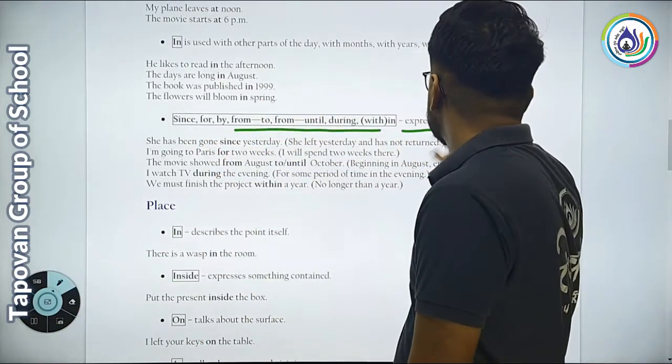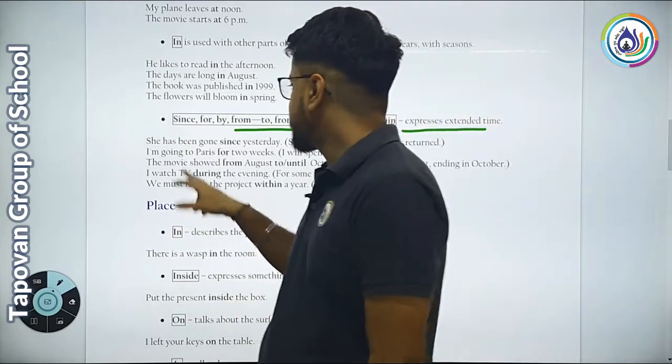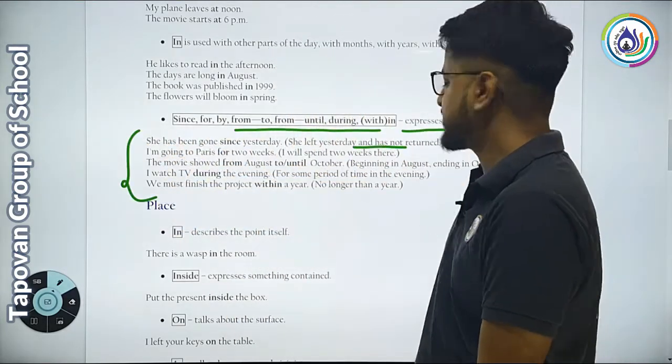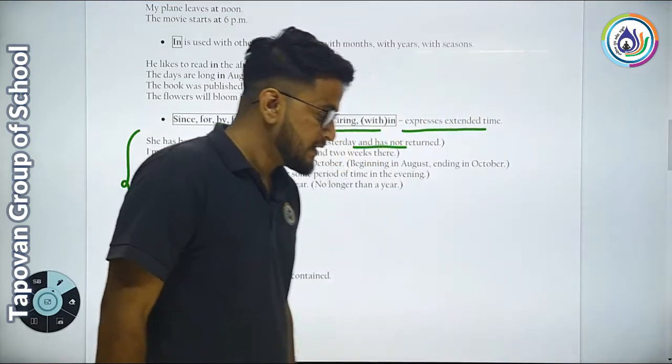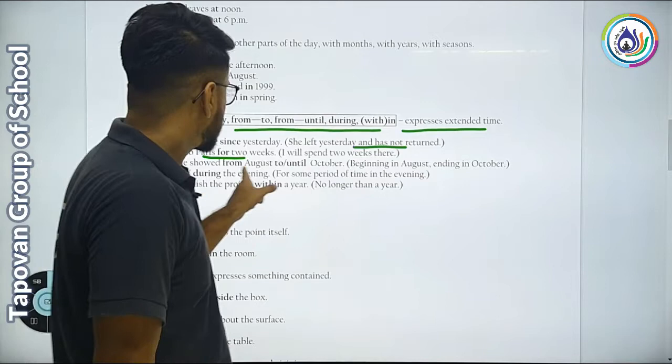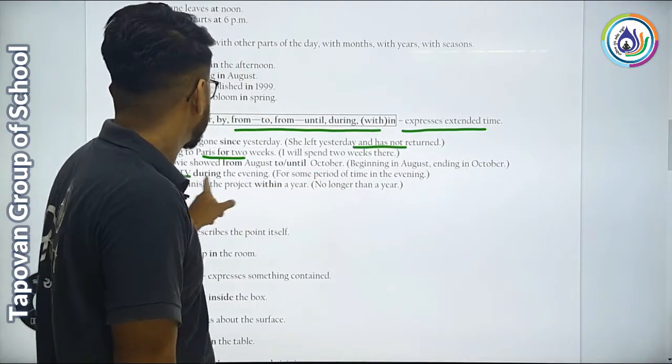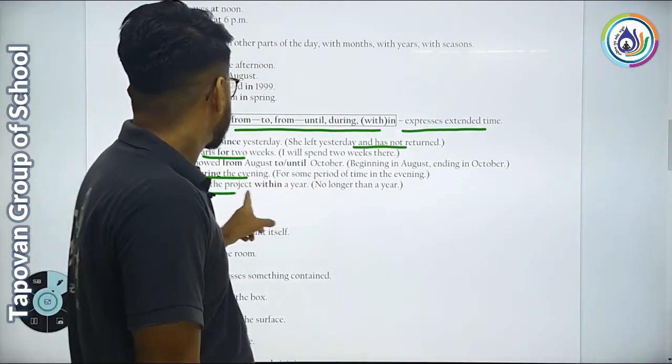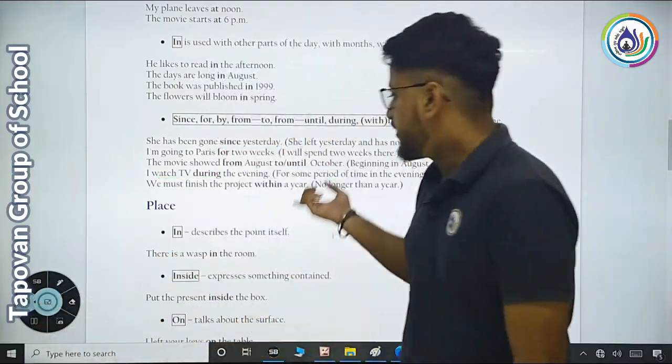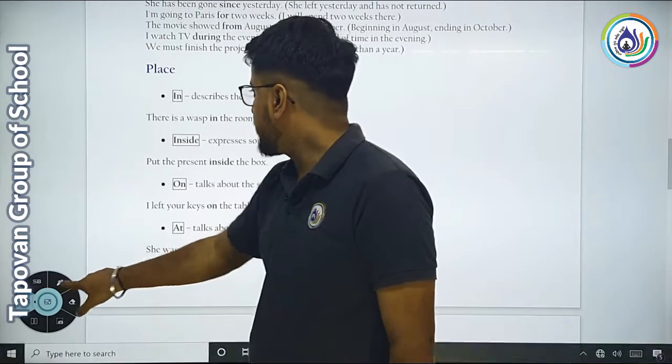Since, for, by, from, to, until, during, within express extended time. She has been gone since yesterday. I am going to Paris for two weeks. The movie shows from August until October. I watch TV during the evening. We must finish the project within a year.